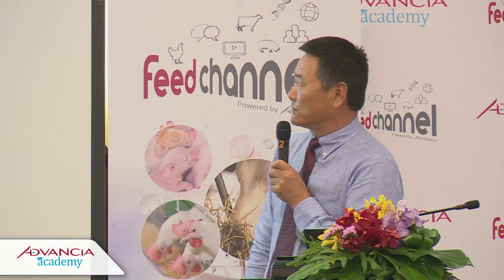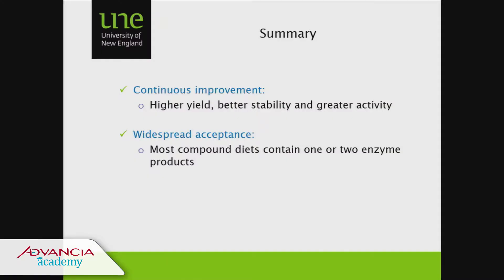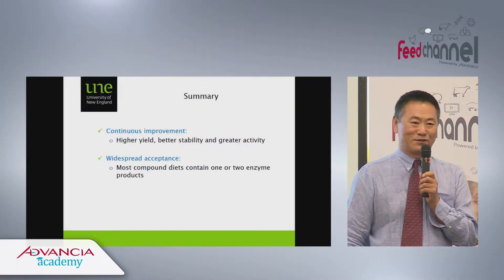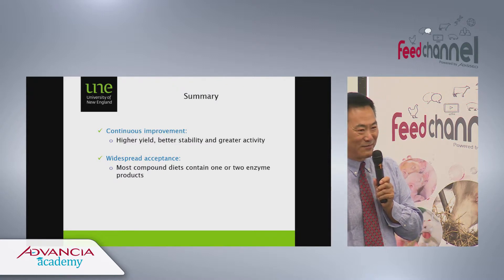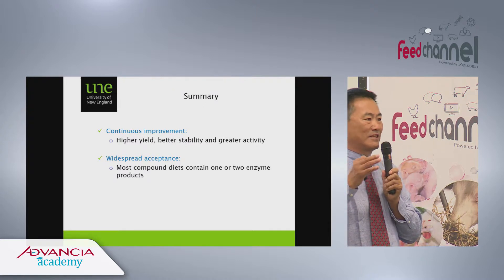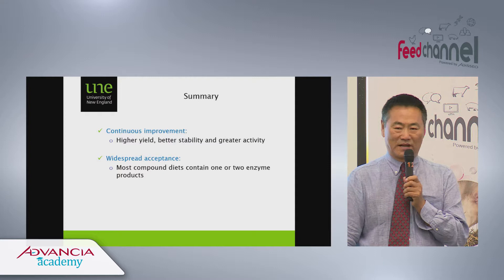In summary, continuous improvements have been made: the yield of enzymes is very high now, stability is better, and activity is greater. When I started research in feed enzyme usage, you were looking at about 35 to 40 dollars additional cost per tonne of feed, and a lot of people used to joke, calling it 'poo poo dust.' But now feed enzymes are part of today's feed formulation — there's no doubt about it.